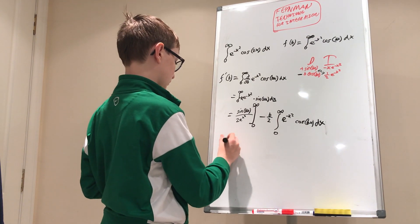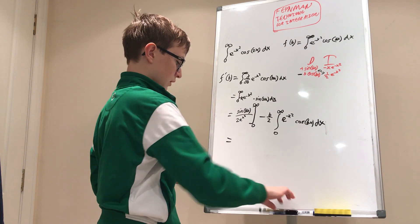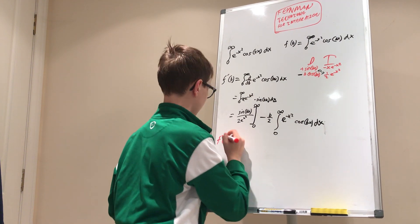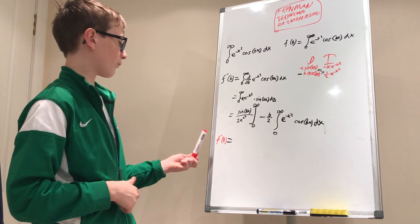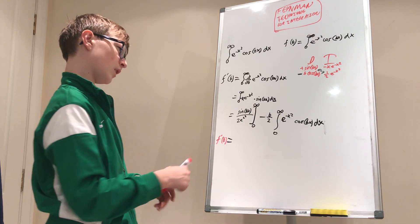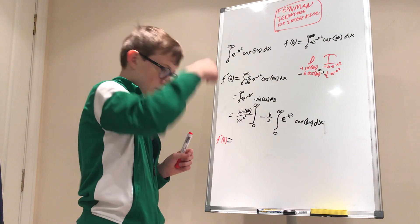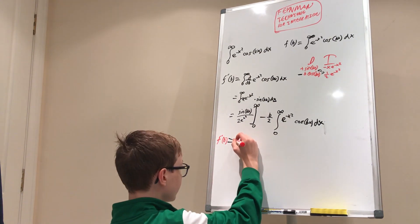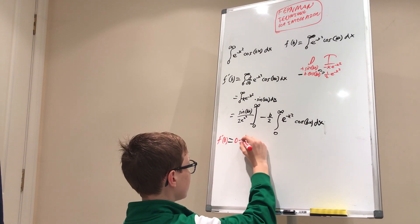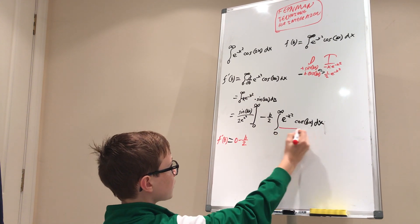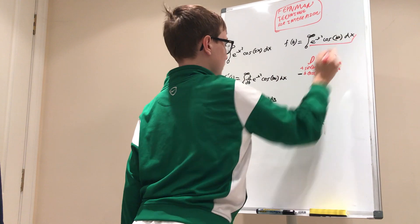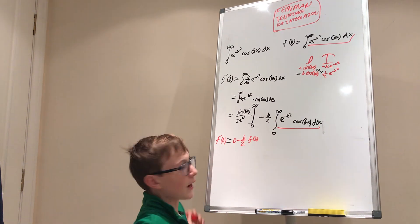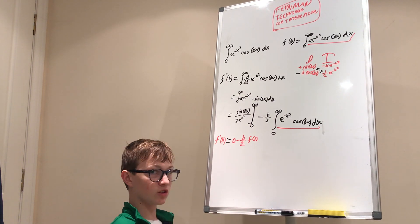Let's deal with the boundary term first. We'll write this in red because it will become a differential equation. F prime of b equals: if we plug in infinity the bottom blows up so that term goes to zero; if we plug in zero, sine of zero is zero so that also goes to zero. So we get zero minus b over two times the integral between 0 and infinity of e to the negative x squared cosine of bx dx — which is just f(b). So f prime of b equals negative b over two times f(b), and this is a separable differential equation.